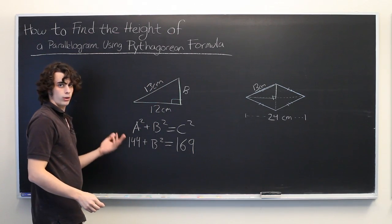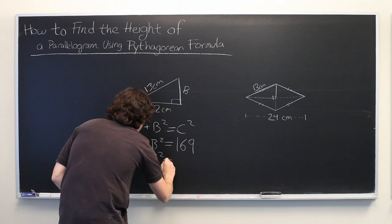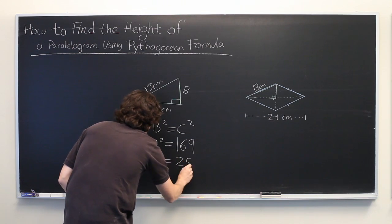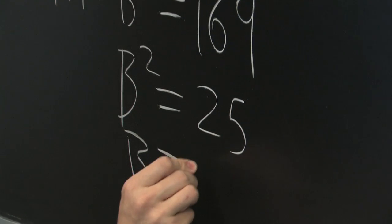We simply subtract 144 from both sides and find that B squared equals 25. That tells us that B is equal to 5 centimeters.